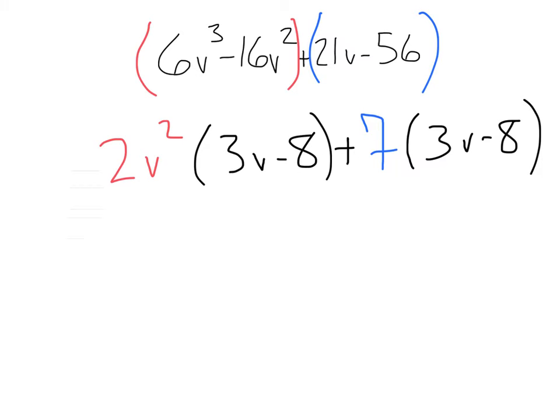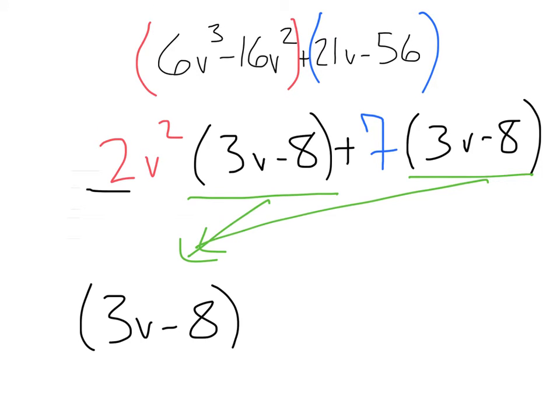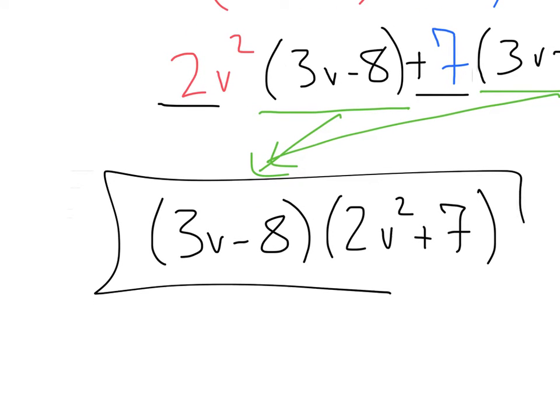Yeah, boy! I got this 3v minus 8 and 3v minus 8. Perfect! Let's pull that out front. And after doing that, we're left with 2v² plus 7. And we are factored.